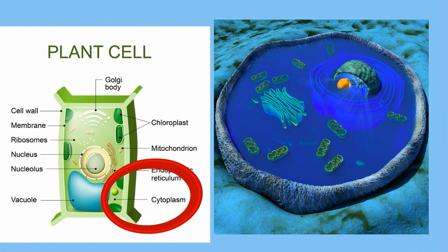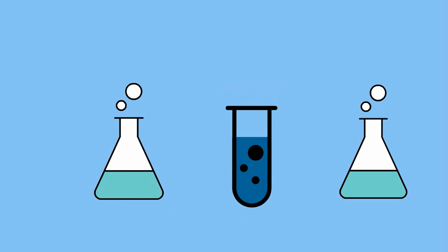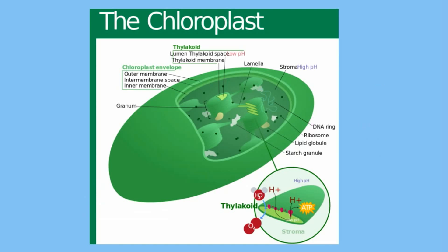Cytoplasm is located between the nucleus and the cell membrane. The cytoskeleton present in the cytoplasm gives the cell its shape. The cytoplasm also contains nutrients and salts and aids in dissolving some waste products. It helps move cellular materials and organelles around the cell through a process called cytoplasmic streaming. Here is an example of cytoplasmic streaming — notice how the chloroplasts move in the eucalyptus cells.